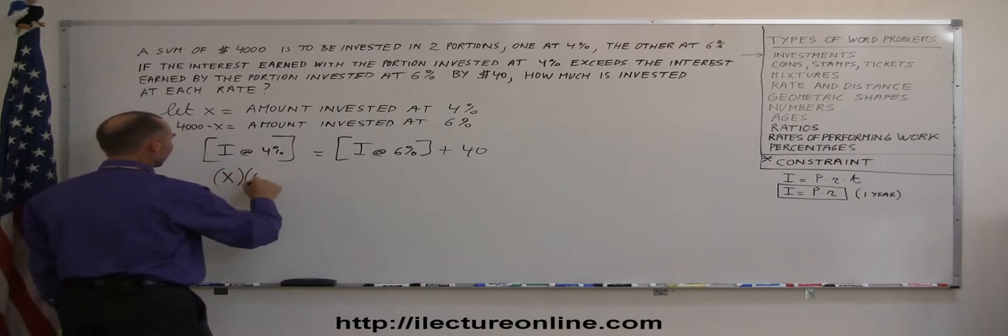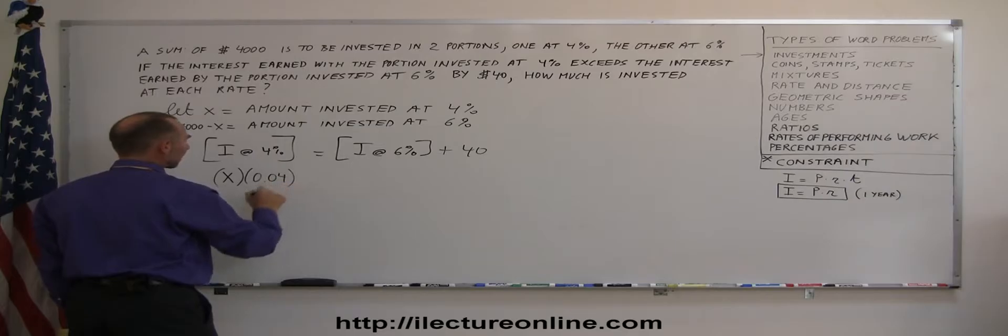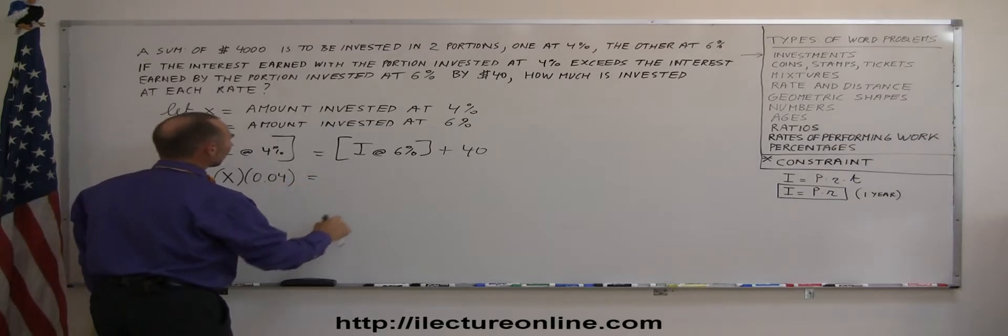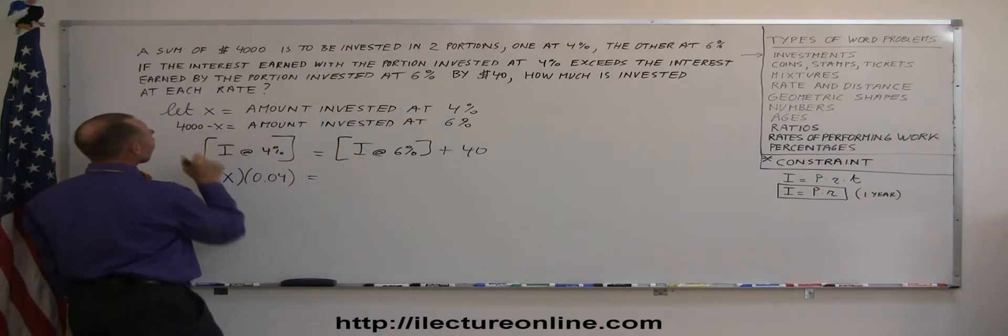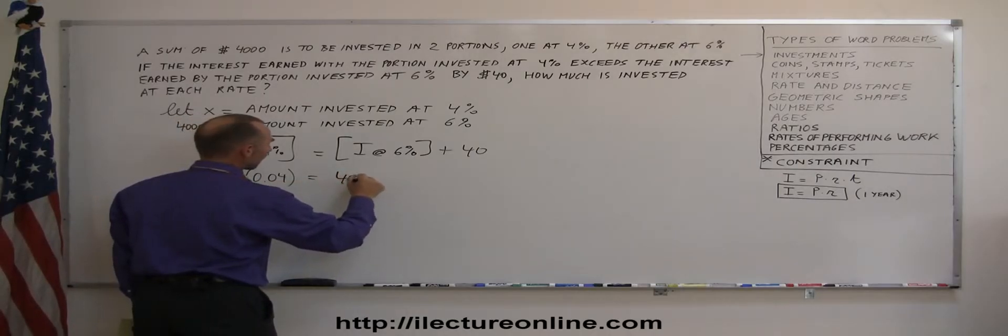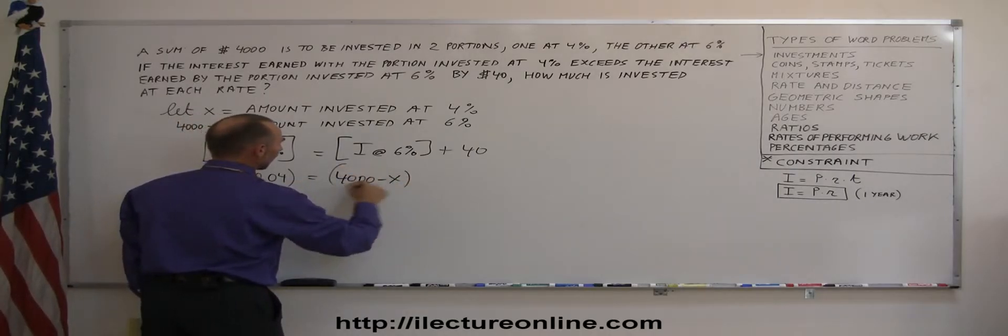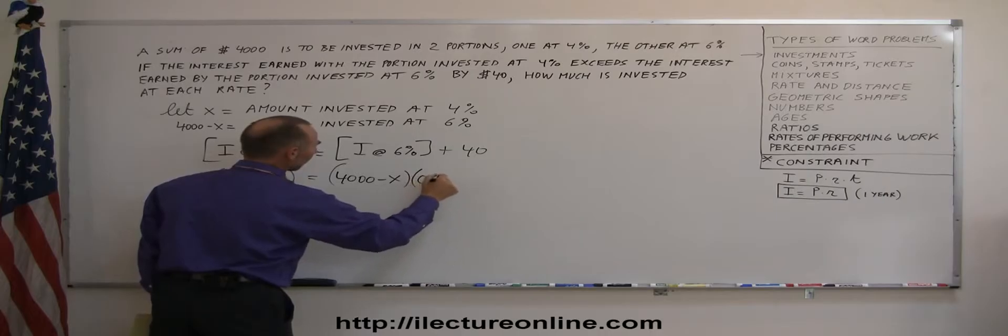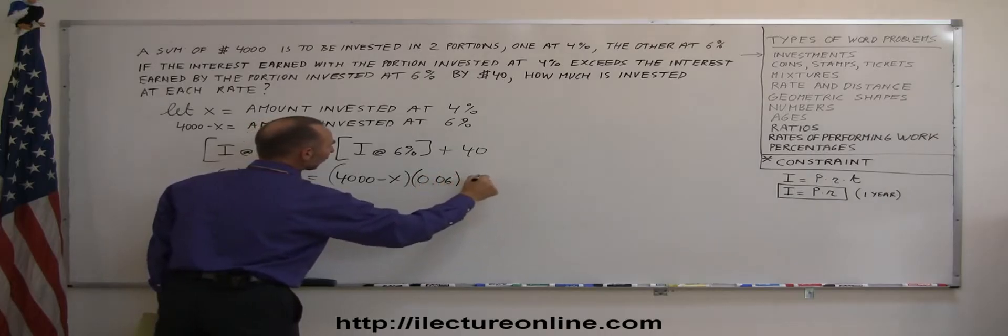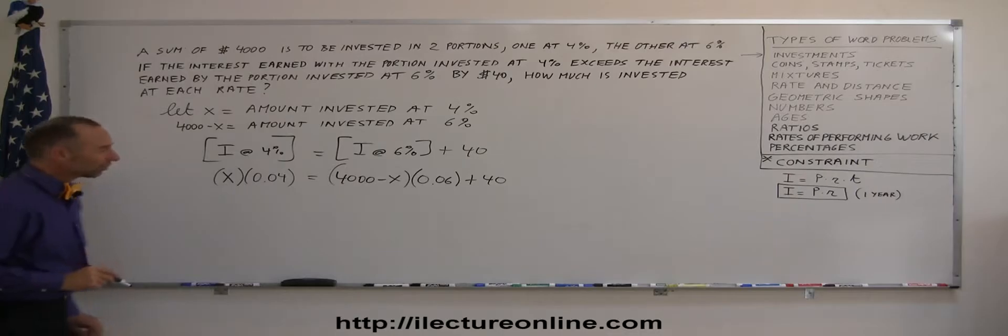So, the interest earned at 4% is going to be the amount invested at 4% times the rate. So, x times 0.04 equals the amount invested at 6%, so it's 4,000 minus x, times 6%, which is 0.06, plus 40. And now I'm ready to solve this equation.